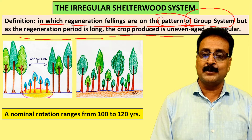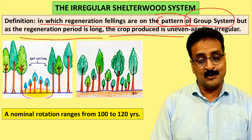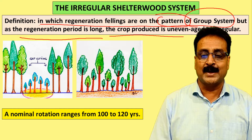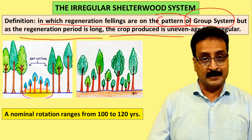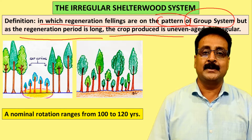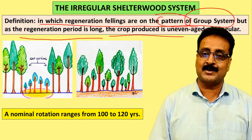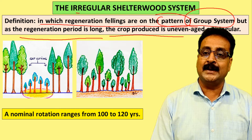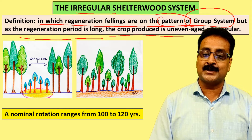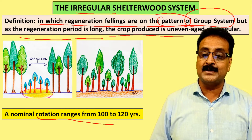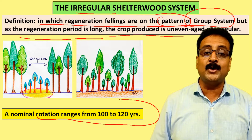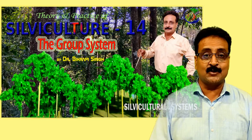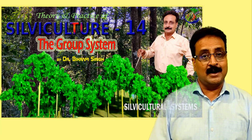For detail on the group system, you can watch lecture 14. The nominal rotation period of the irregular shelter wood system is 100 to 120 years or even more. Let me briefly explain the group system and selection system before explaining how the irregular shelter wood system is a compromise of these two.